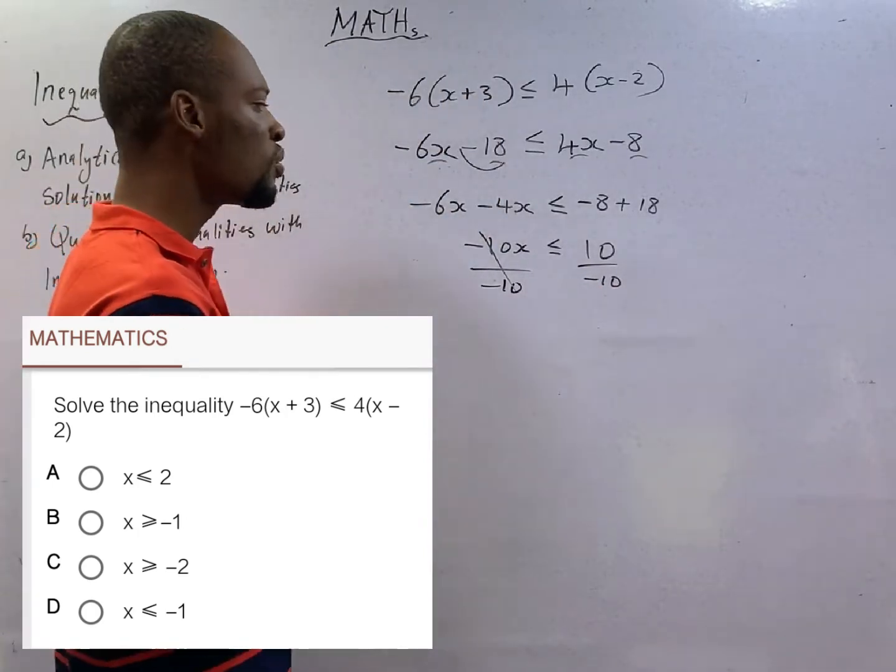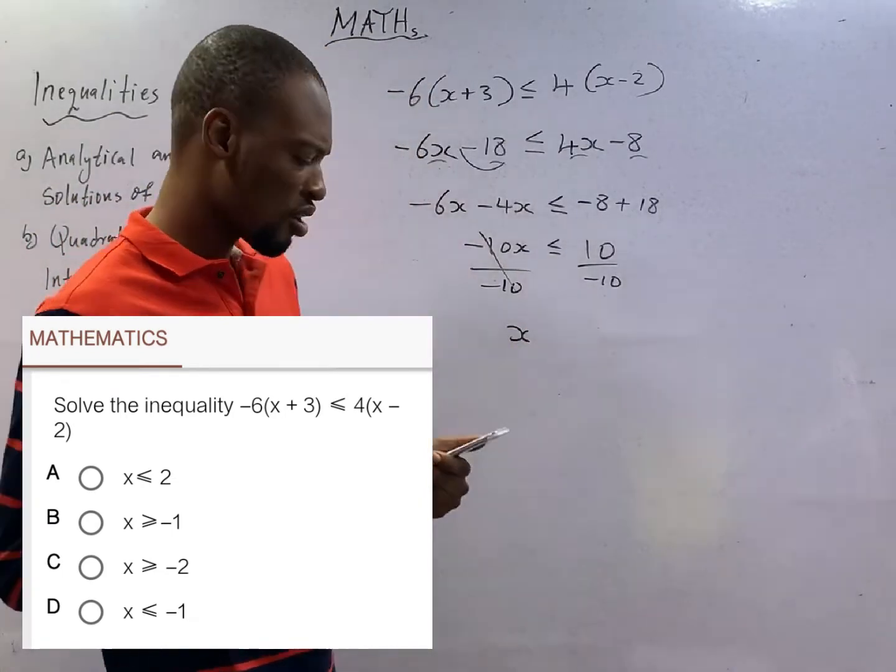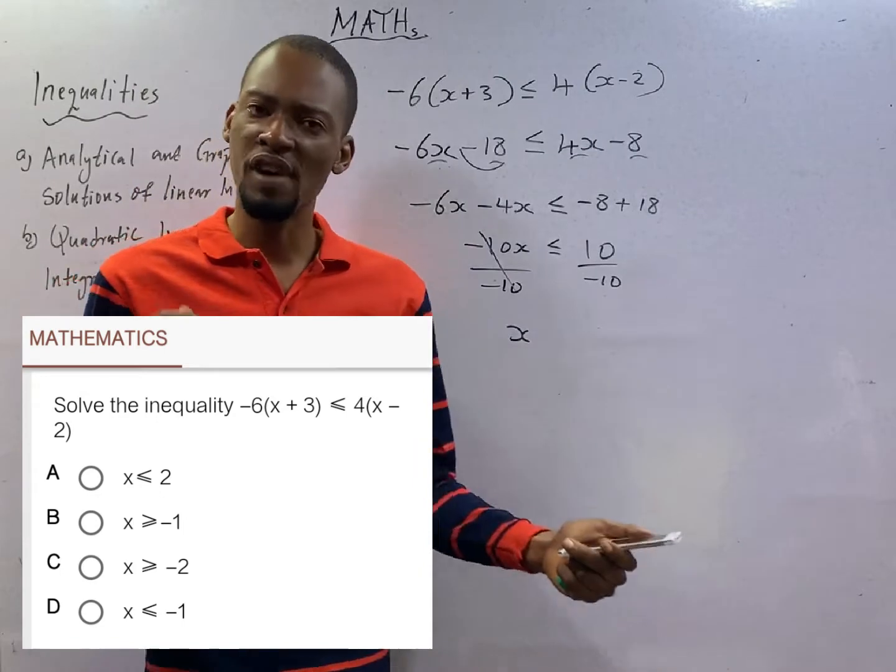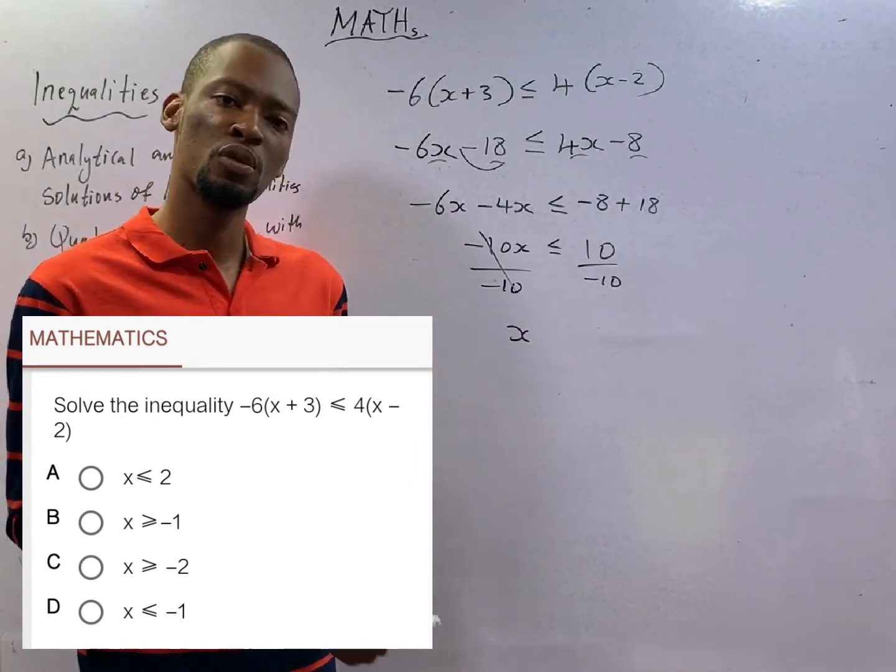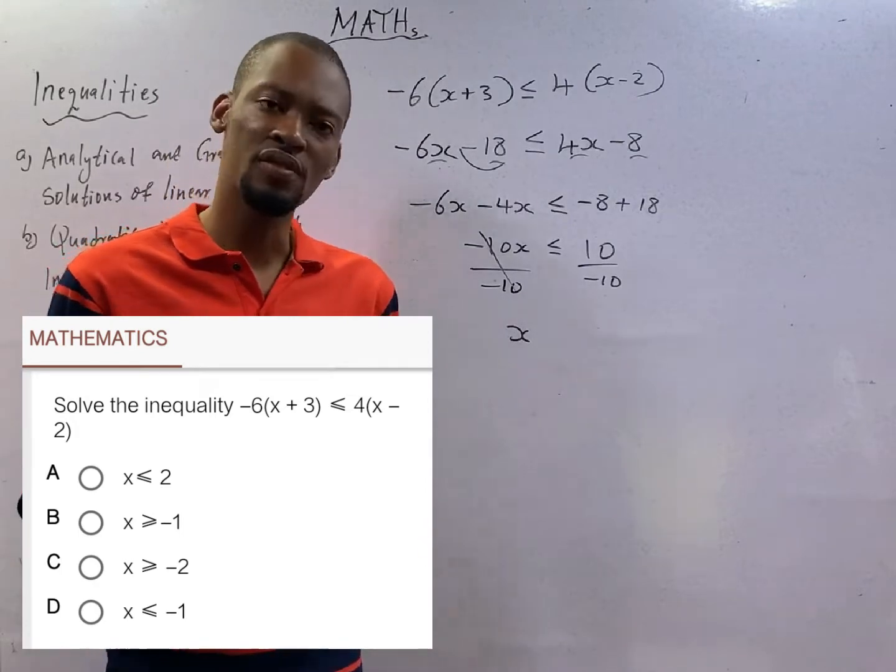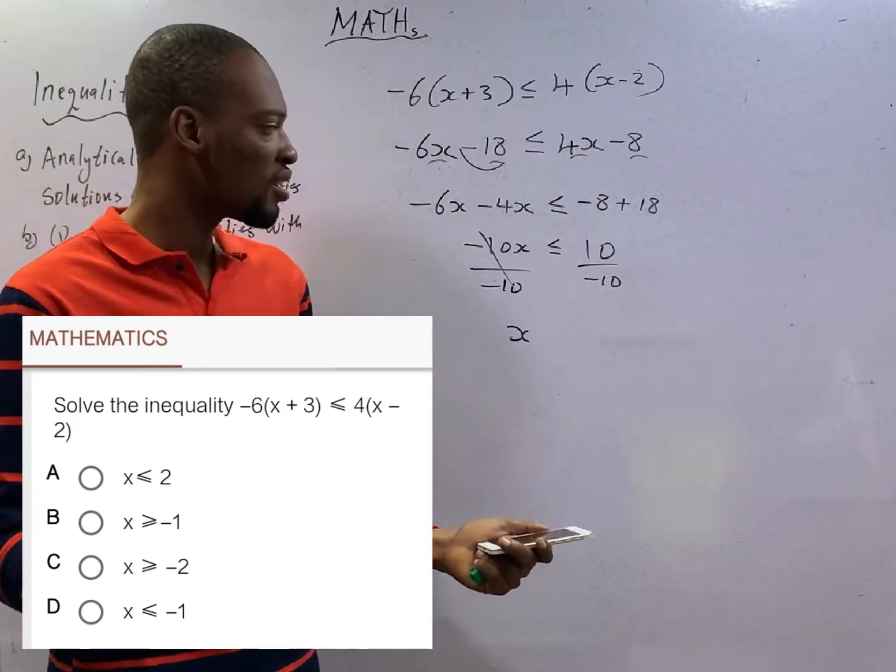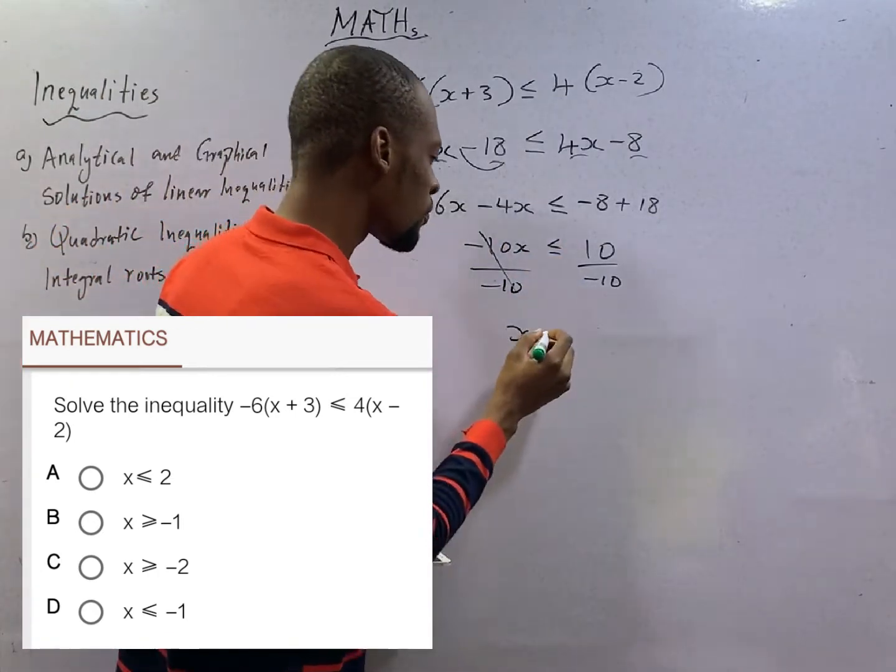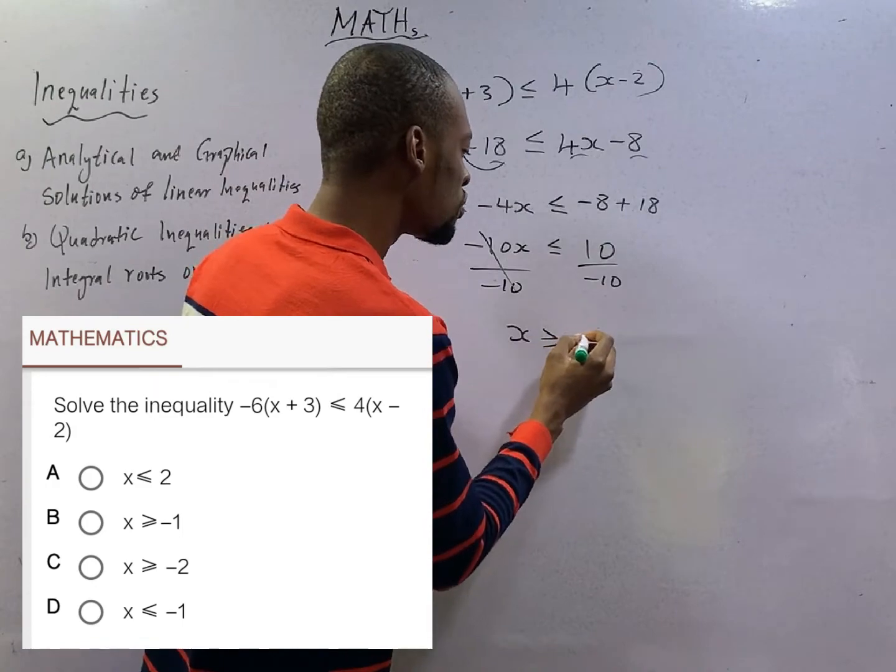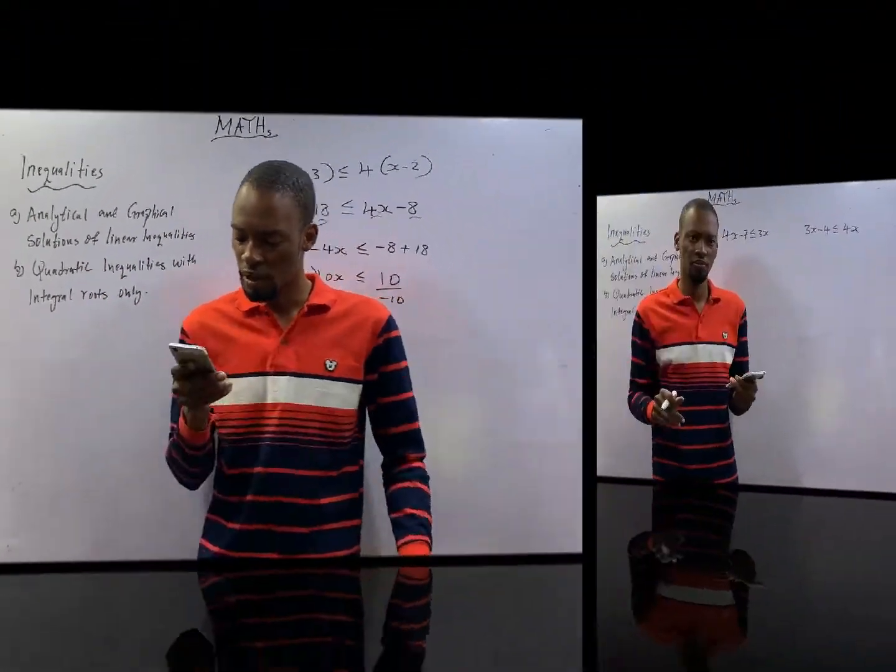Don't always forget the rule of the game. Here is x, that is true. But immediately you divide both sides by a negative number, or you multiply both sides by a negative number, the sign must change. So this case, it will change from less than or equal to, to greater than or equal to -1. Because you divided by a negative number.